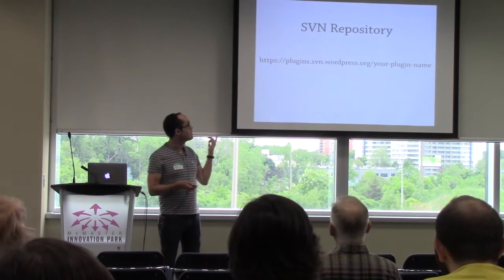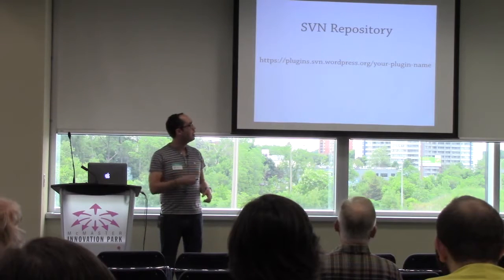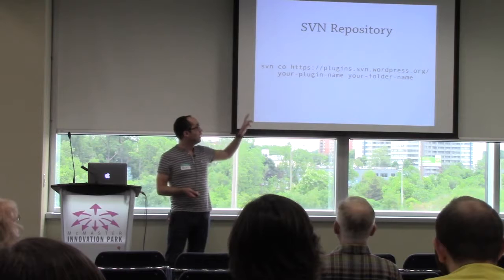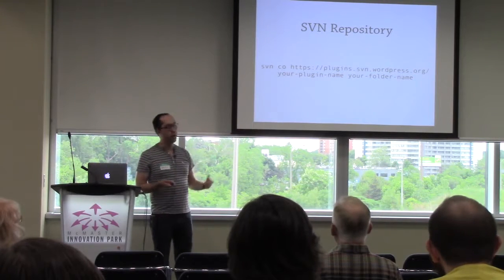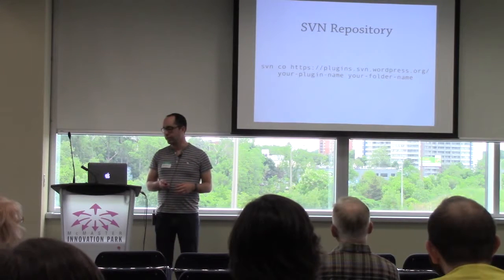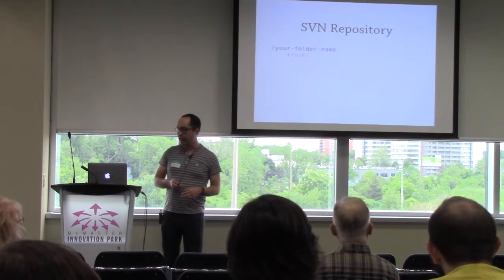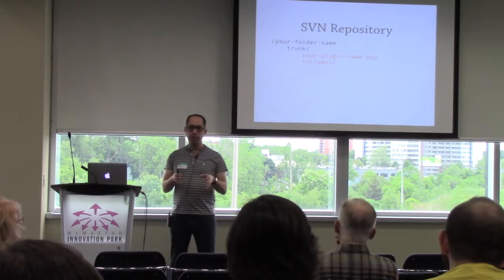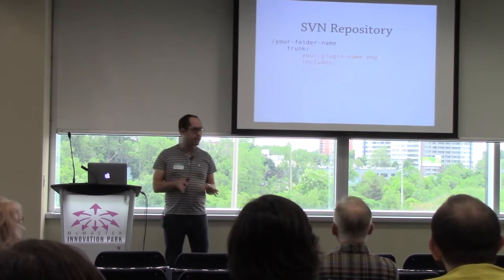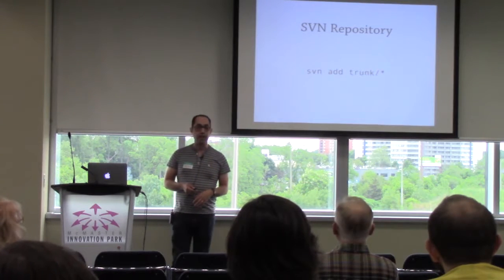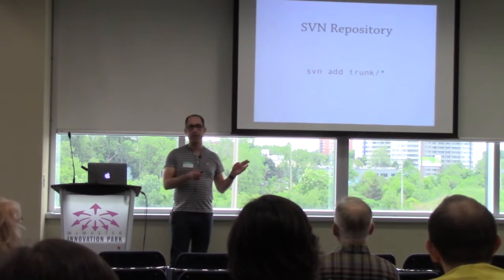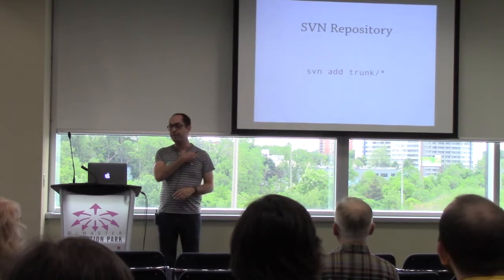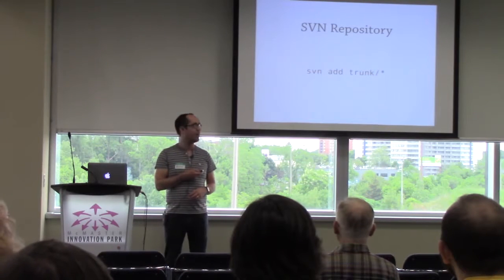Once you submit, you wait — they're volunteers, so there's no set time, but they're usually pretty quick. Once approved, you get an SVN repository. There are just a couple of commands to get your plugin released. You run 'svn co' for checkout with the URL from the email and a folder name — that creates a folder on your computer with a trunk folder. You copy your plugin code into trunk: your main plugin file, any included files, your readme.txt, all that. Then type 'svn add trunk' to add all those files to SVN. These slides will be available so you don't need to frantically write these commands down.